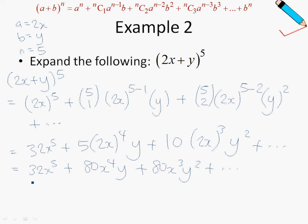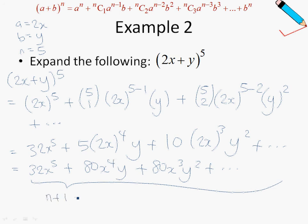Just a quick quiz question: if I were to expand this and write out all the terms, how many terms do you think there are? The answer would be, once again, n plus 1 terms. Since n is 5, there will be a total of 6 terms.